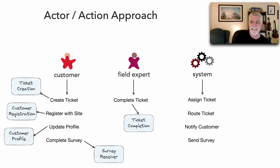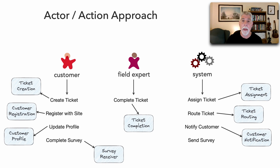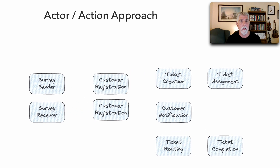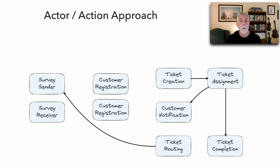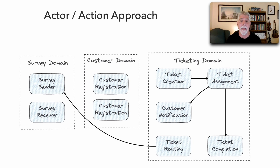Now for the system itself: assigning a ticket becomes Ticket Assignment; routing tickets becomes Ticket Routing; notifying the customer becomes Customer Notification; and sending the survey becomes Survey Sender — so we have both a Survey Sender and a Survey Receiver. We take these actions from these actors, build the initial logical architecture, identify interactions with the different actors, and establish relationships between components. We can then start identifying domains and groupings: a customer domain, a survey domain, and a ticketing domain.